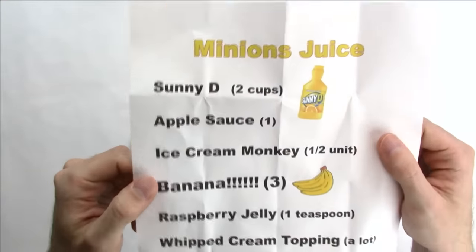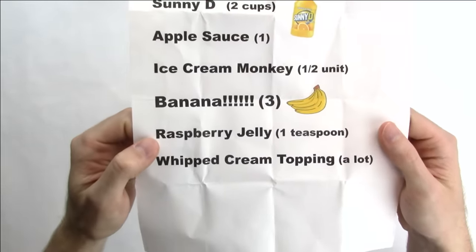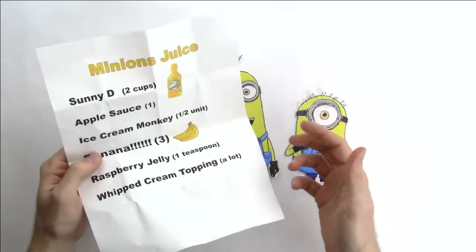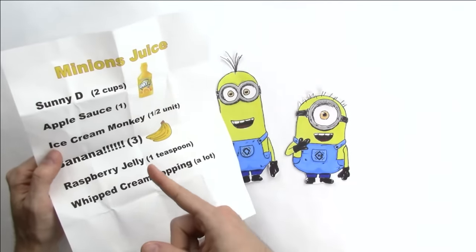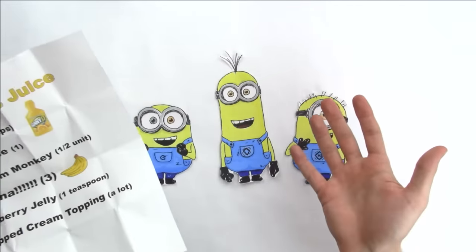Minion juice? Okay, Sunny D, applesauce, ice cream, banana, raspberry jelly, whipped cream. Okay, well first, before we do this, we need to design the bottle.